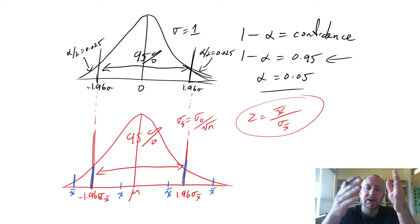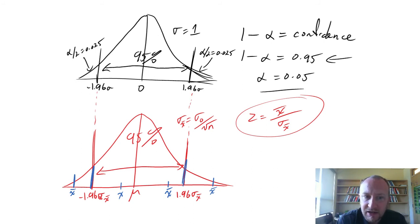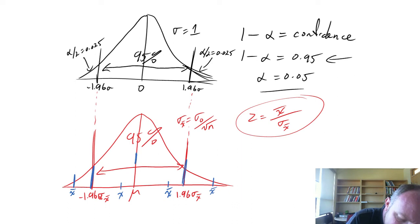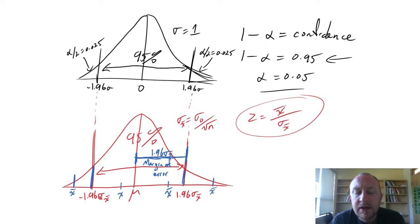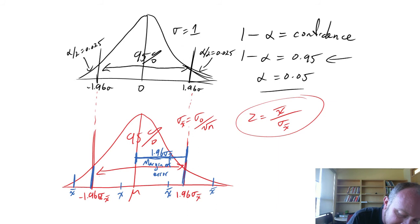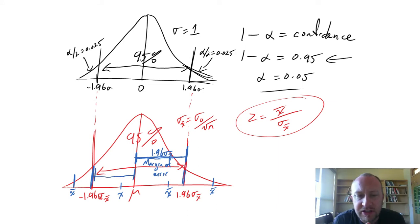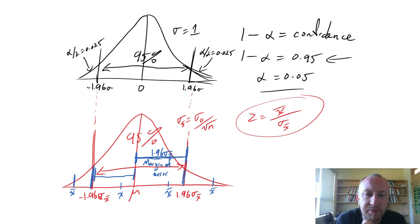Of course, that means there's a 2.5% chance of a sample mean way out in one tail, or a 2.5% chance way in the other tail. So there's a possibility it's outside those limits. The distance between the population mean and that upper limit is what we call our margin of error, and it's exactly equal to 1.96 times that standard error — the same on both sides.